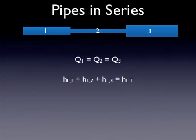And then it should also be apparent that the energy loss through the whole sequence of pipes is equal to the sum of the energy loss in each of the individual pipes. So the energy loss in one plus the energy loss in two plus the energy loss in three is the energy loss through the three of them combined. I think that's all fairly obvious.